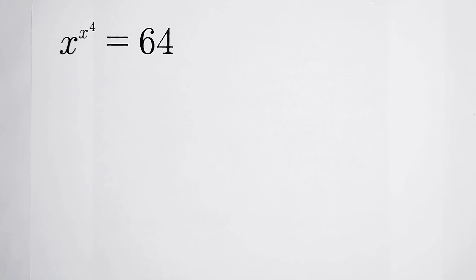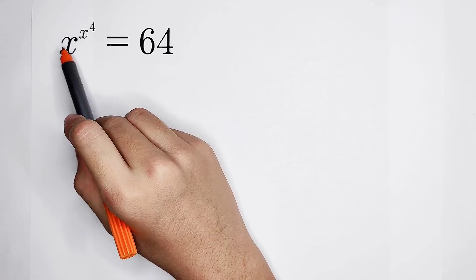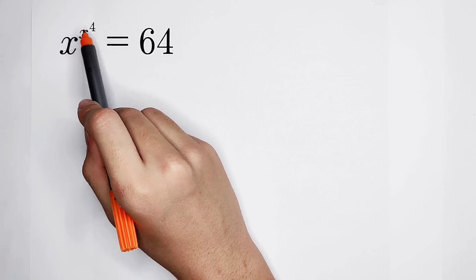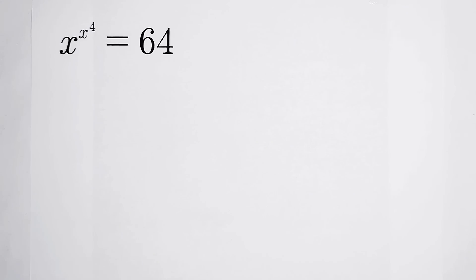Welcome back to Math Window. Let's start this equation: x to the power of x to the power of 4 is equal to 64.